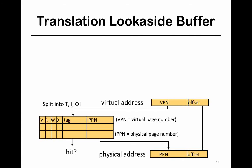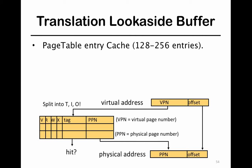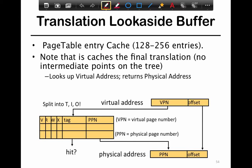TLB caches page table entries, and these page table entries are tagged by the virtual address of the page itself. A typical page table entry cache typically has about 128 to 256 entries. Sometimes there may even be a level 2 that's shared, for example, in most modern processors today.